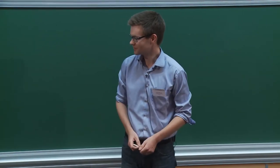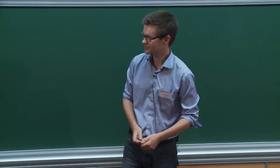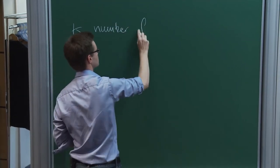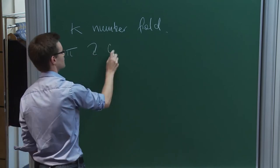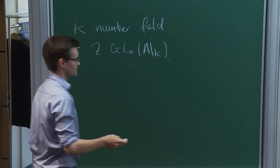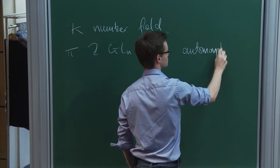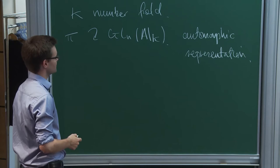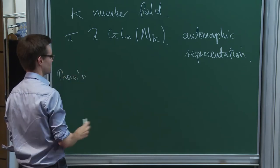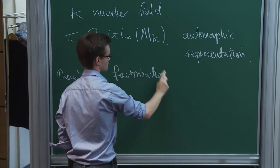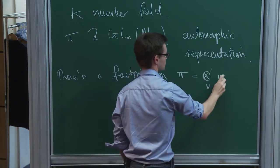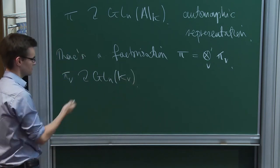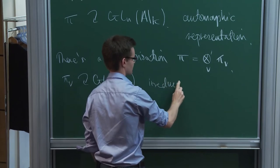I'm going to begin by establishing some notation which, I apologize, is going to be rather similar to what Arnaud told you at the beginning of his lecture, but it's impossible to talk about these things without being precise. So throughout my lecture today, k will be a number field, and pi will denote an automorphic representation of GLn of the adeles of k.